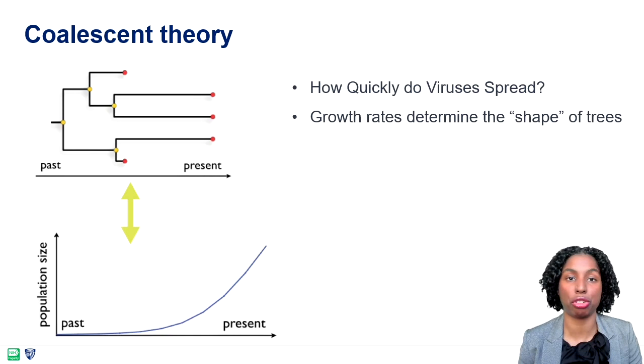Thus, one can use the pattern of coalescent events to infer the population growth dynamics over time.